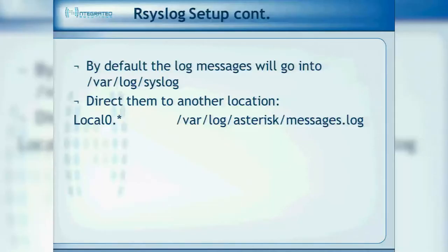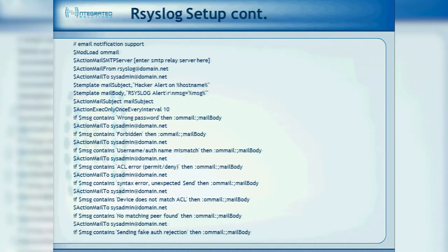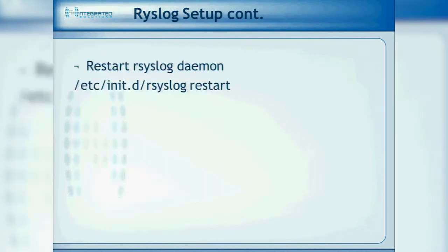By default, Asterisk logs to its own message files, but you can change that to var/log/syslog. When anything happens in rsyslog or fail2ban, it emails me as the administrator. You set up what messages are important — for example, every tenth interval, if the message contains 'wrong password,' you get that email. This is at the bottom of the rsyslog configuration file. These are actual config files — I have the presentation and a Word document white paper online so you can cut and paste right into your servers.